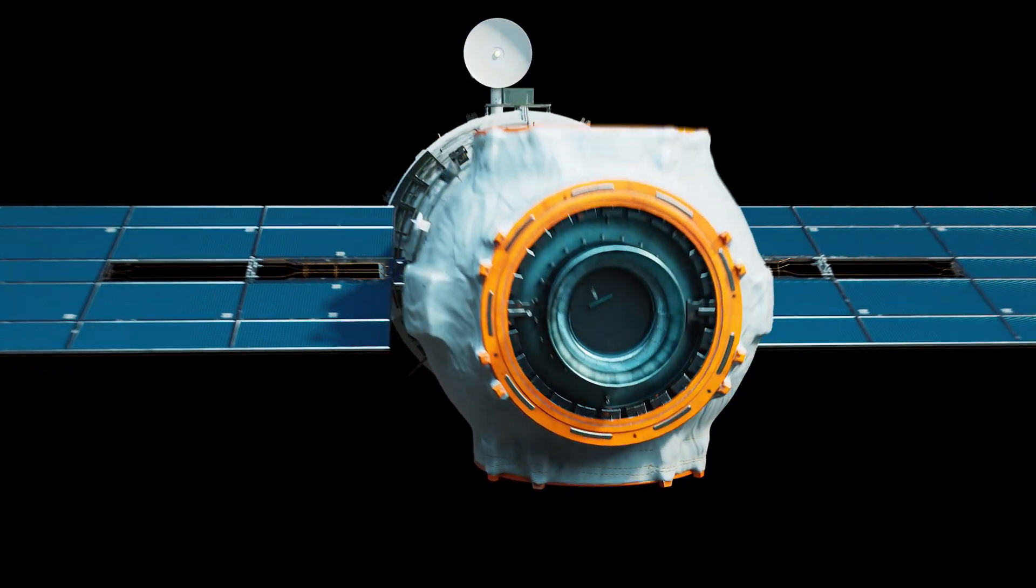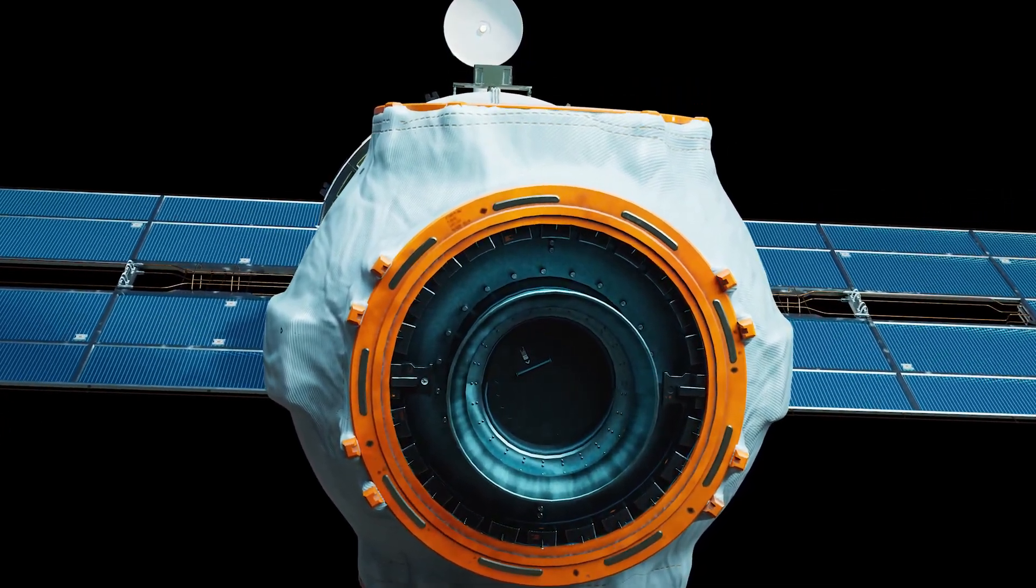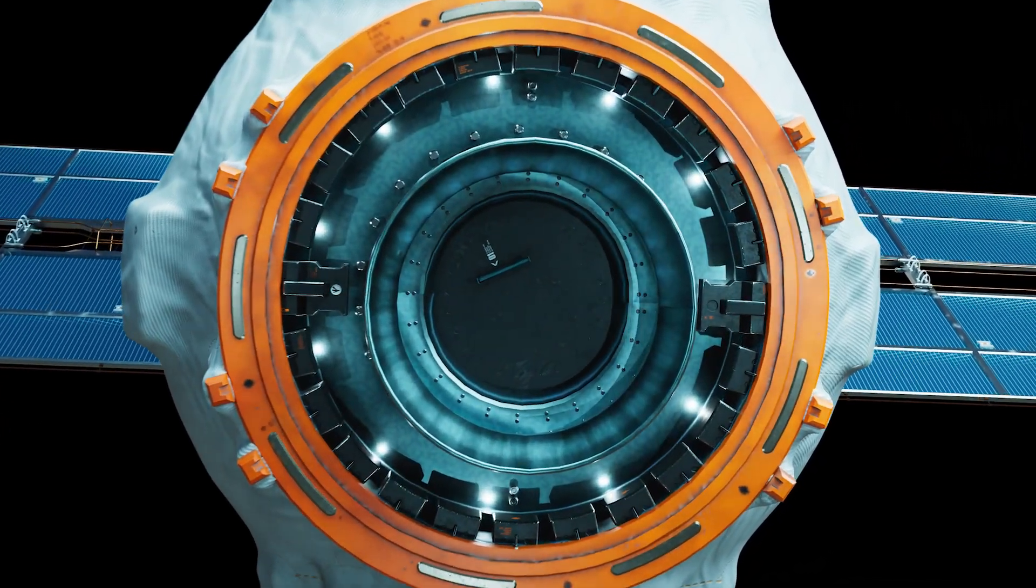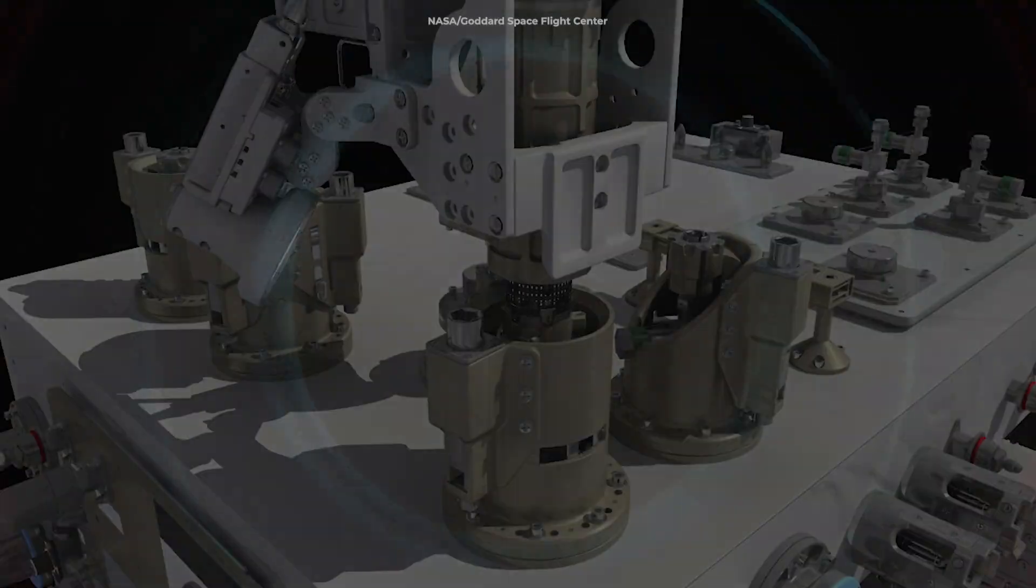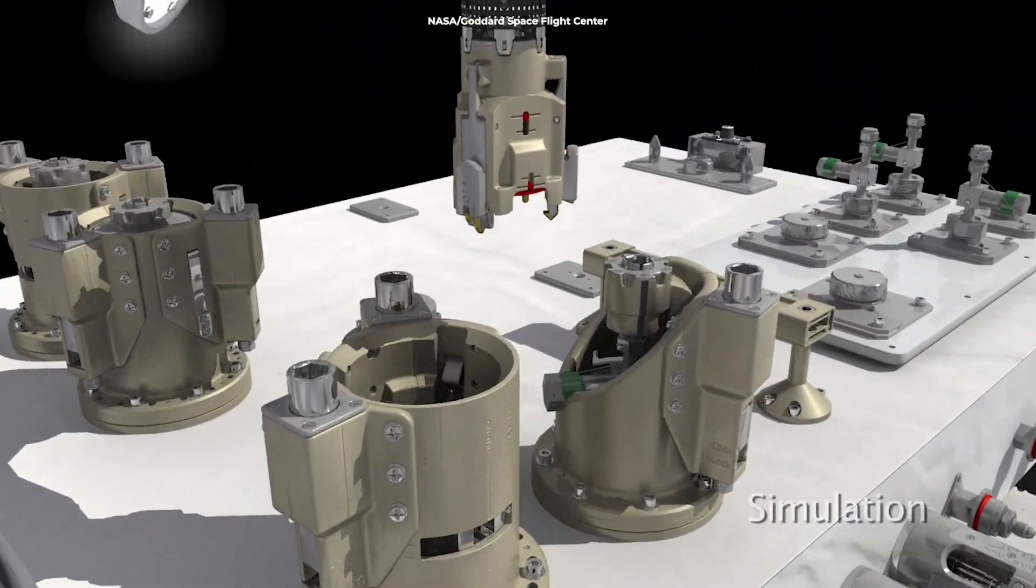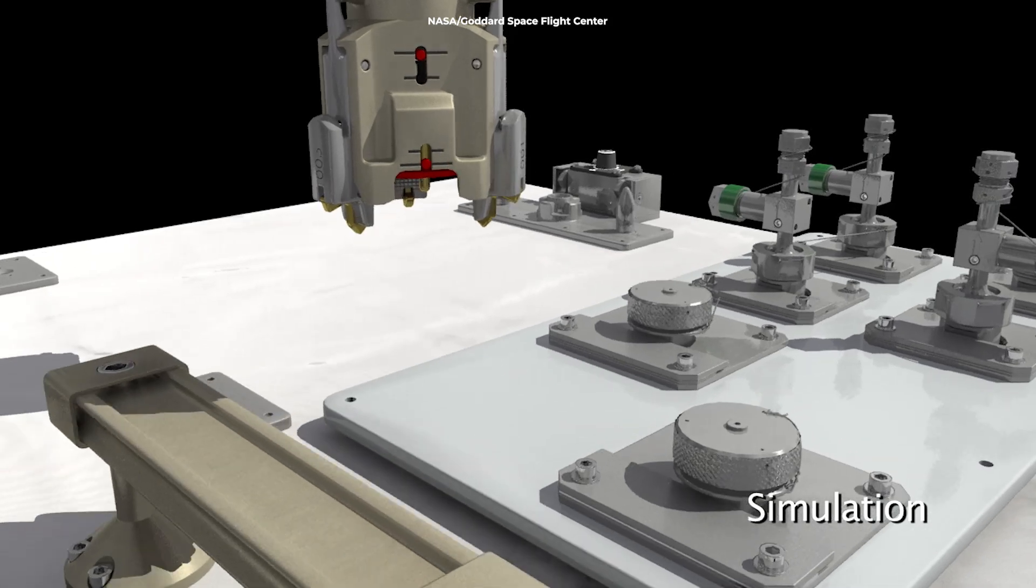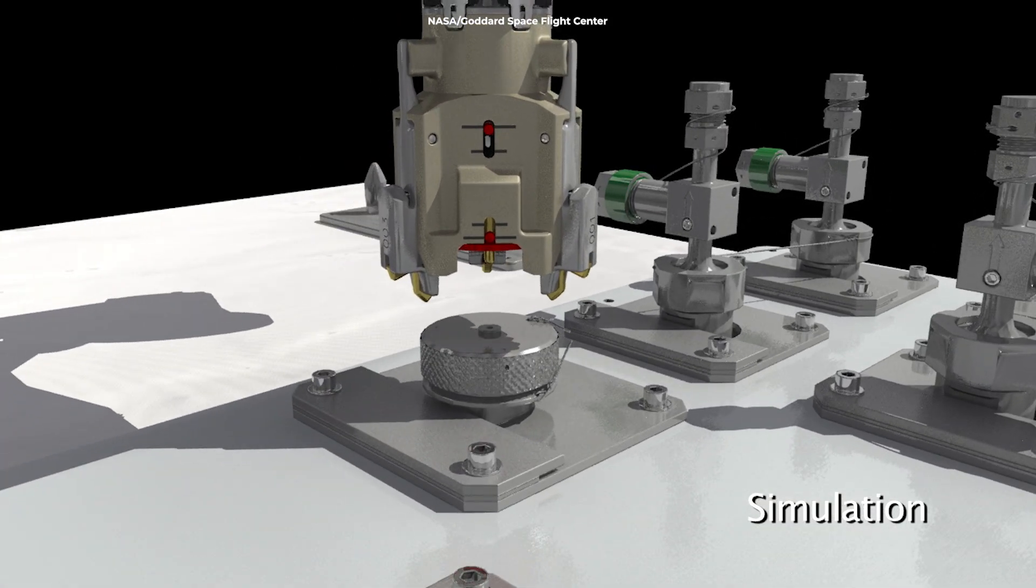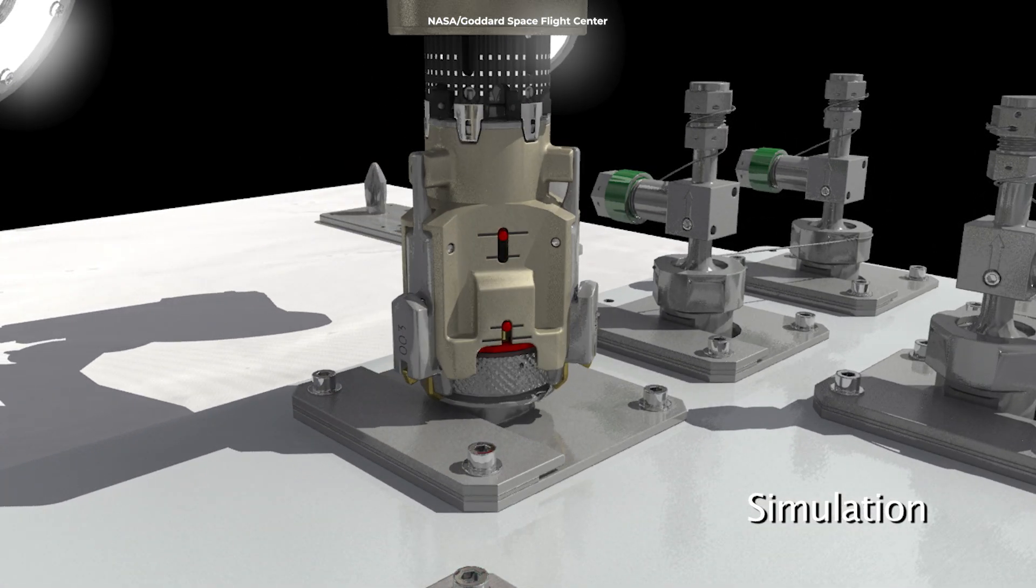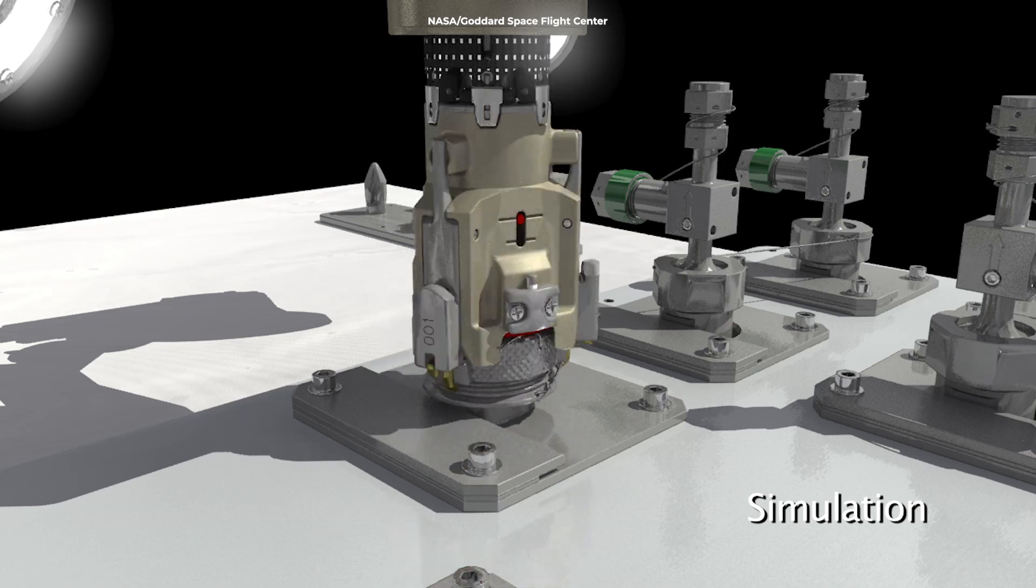Here's where it gets fascinating. When an instrument needs to be replaced or upgraded, a servicing vehicle will dock beneath the observatory carrying the new instrument. Then robotic arms will open the compartment doors, slide out the old instrument along guide rails, carefully maneuver the new instrument into place, and secure everything back in position.